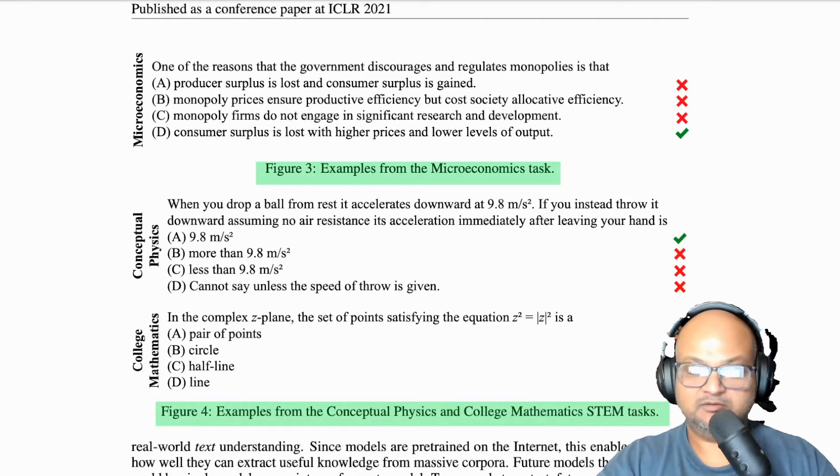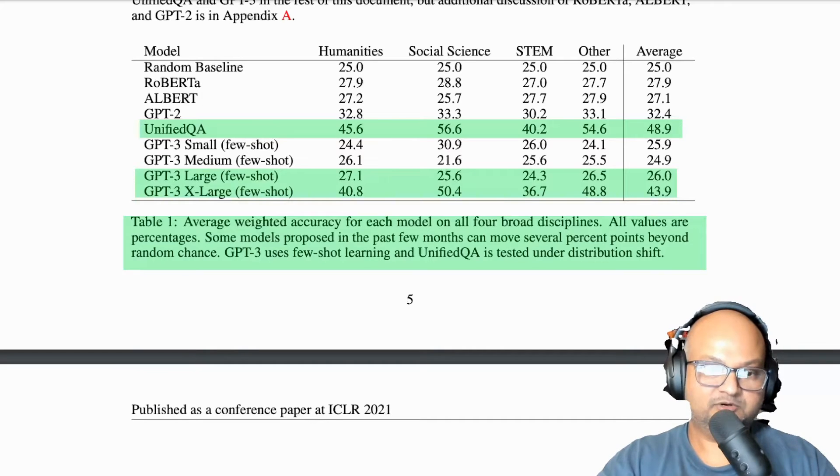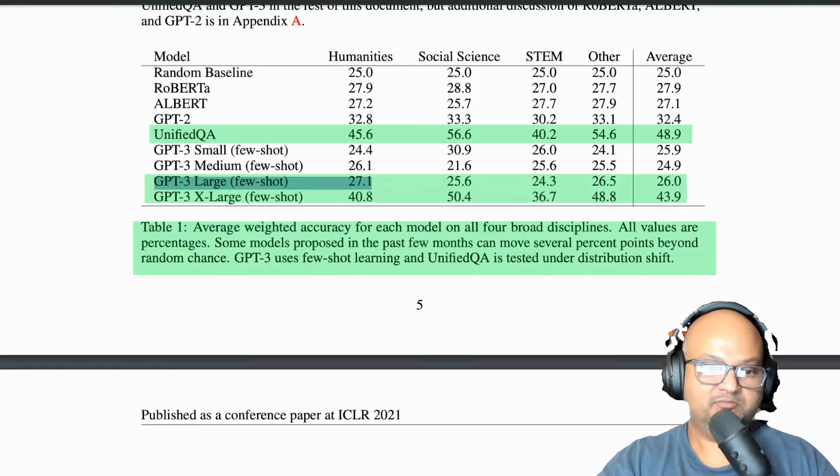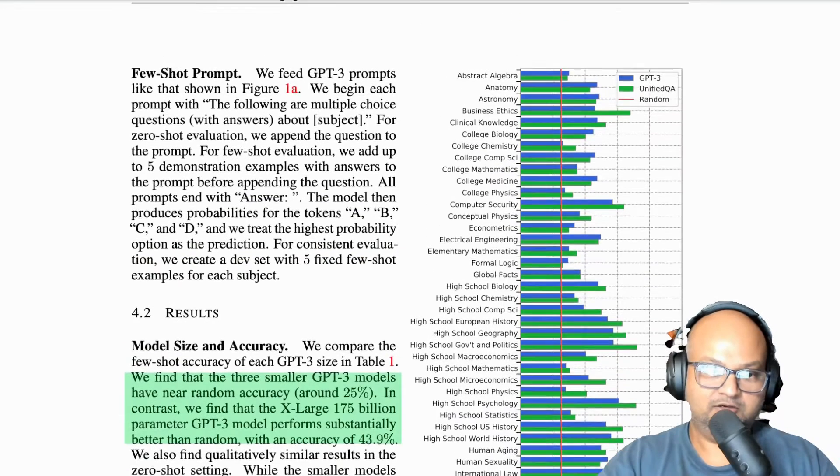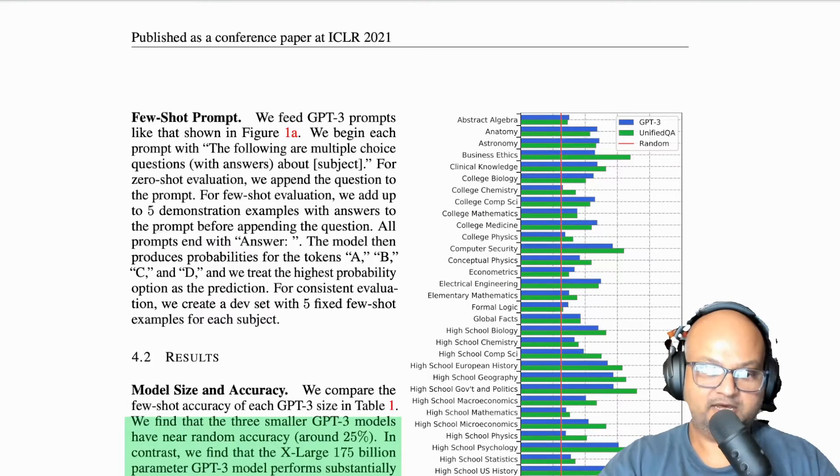Note that these are multiple choice questions, so random chance would give you about a 25 percent score. And here you can see a summary of how various large language models have performed on this test. You can see that the GPT-3 model barely does better than random chance, the unified QA model does a bit better than random chance, and the GPT-3 extra large model also does better than random chance.